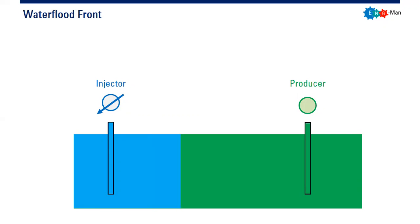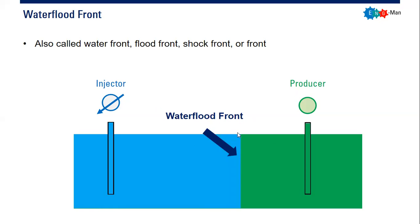This is a continuous process, and you can see the front or the face of the water by looking at the boundaries between the blue zone and the green zone. This is what we call the water flood front — the boundary or interface between the flooded zone and the zone that hasn't been flooded yet.